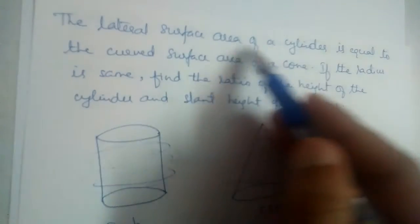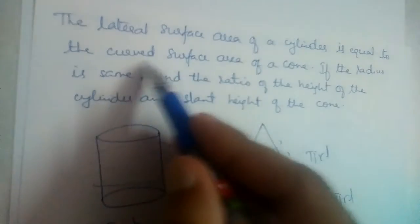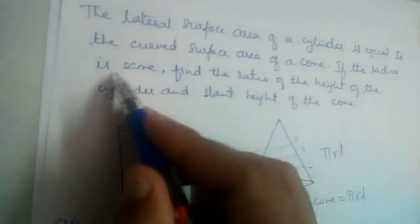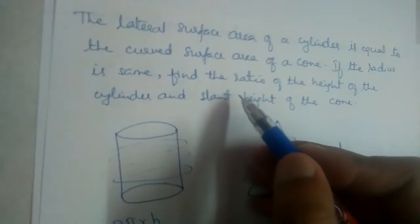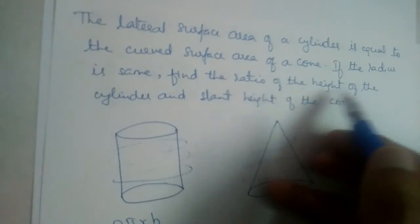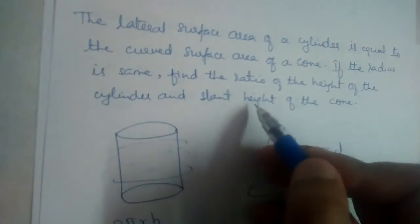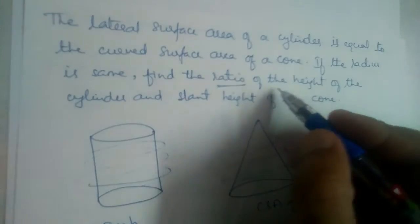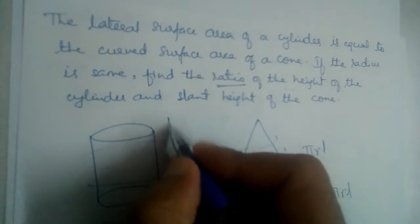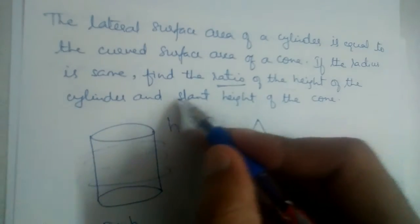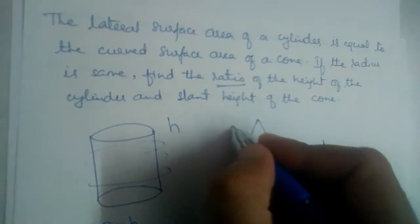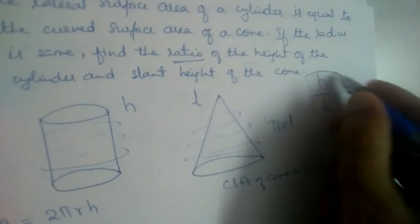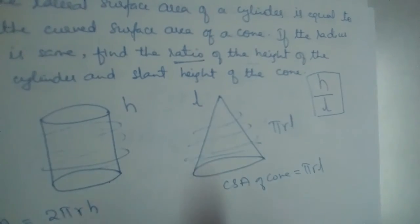The lateral surface area of the cylinder is equal to the curved surface area of the cone, and the radii are also the same. We need to find the ratio of the height of the cylinder to the slant height of the cone — that is, h divided by l.